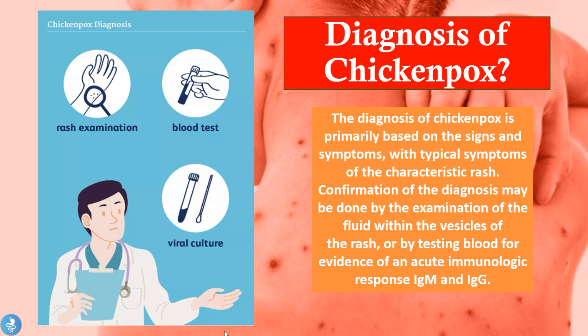To diagnose this disease we look for the characteristic rash. We can also do a viral culture — taking swabs from the fluid from these vesicles and sending them for laboratory testing — or we can do a blood test to specifically look for antibodies against the varicella zoster virus. The IgM antibodies will speak of a current infection and the IgG antibodies will speak of a past infection in these patients.